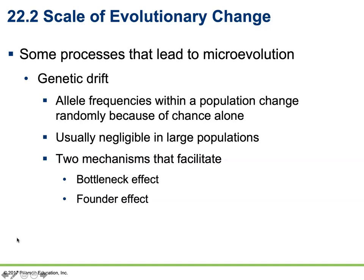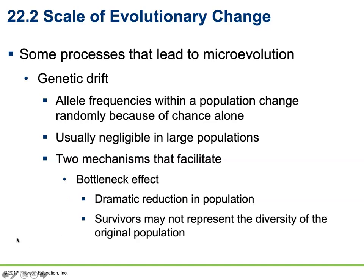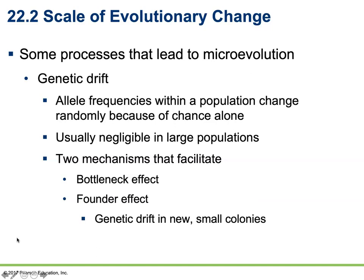A bottleneck causes a change in the gene pool when there is a dramatic reduction in population size. Individuals are killed at random and the alleles in survivors may not be representative of the original population. The founder effect is very similar, except that instead of a natural disaster wiping out a large portion of the population, a small sample of individuals becomes isolated and forms their own population.